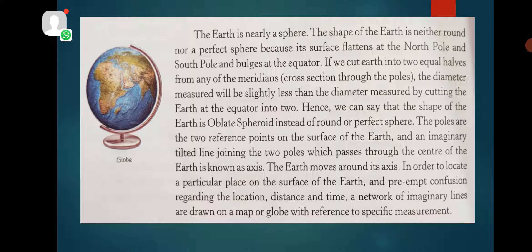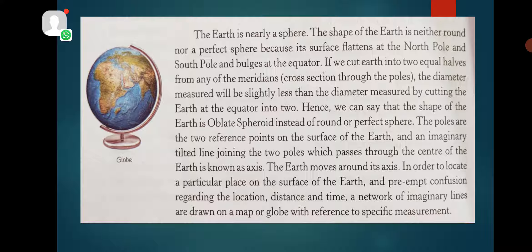The orbital means the path on which the earth revolves around the sun. The north end of the axis is known as the north pole and the south end of the axis is called the south pole. There are two poles.